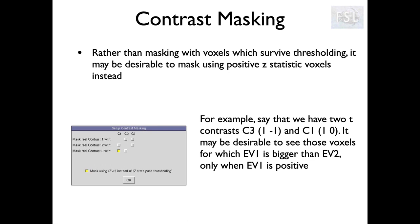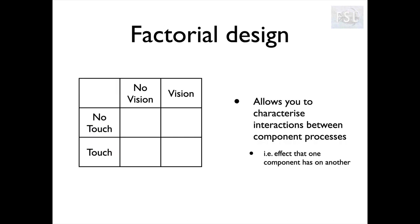Contrast masking is really useful for asking these AND questions and for splitting up differential contrasts — those are two things we can use it for. But that's only one of the things we might want to look at. If we've got our factorial design, we can ask about what regions of the brain are responding to vision and to touch, but there are more interesting things we can ask as well.